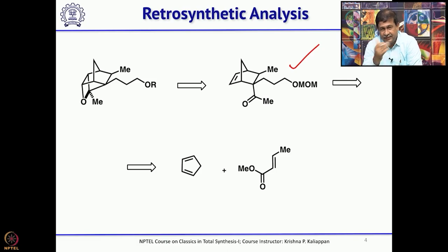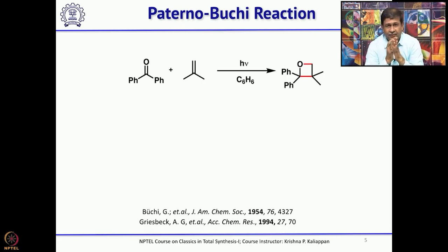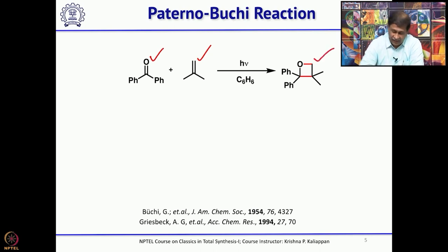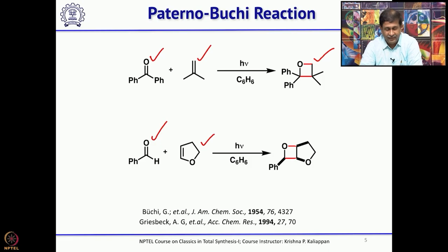Before we discuss the total synthesis of isocomines reported by Rawal, we will briefly discuss the three key reactions. First is the Paternò-Büchi reaction — a photochemical 2+2 reaction between an alkene and a carbonyl group. For example, starting with benzophenone and isobutylene under photochemical conditions you get a four-membered ring oxetane. One can also do the same with an aldehyde. If you do the same with benzaldehyde and dihydrofuran, you end up getting a bicyclic compound.